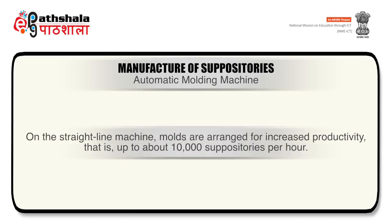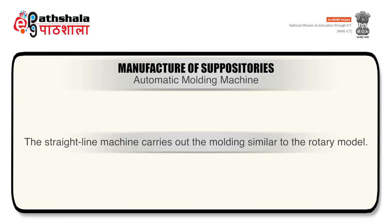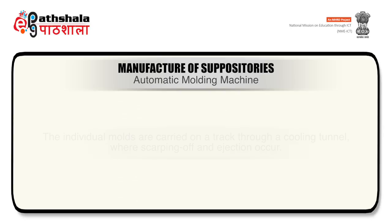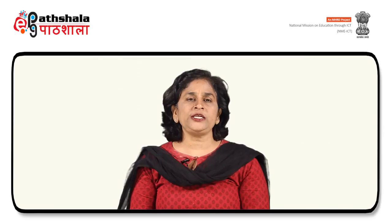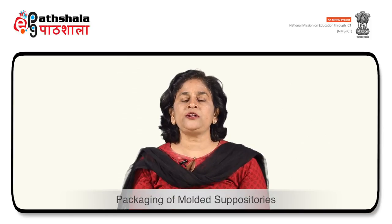On the straight line machine, moulds are arranged for increased productivity of up to about 10,000 suppositories per hour. The straight line machine carries out moulding similar to the rotary machine, with individual moulds carried on a track through a cooling tunnel where scraping off and ejection occurs.